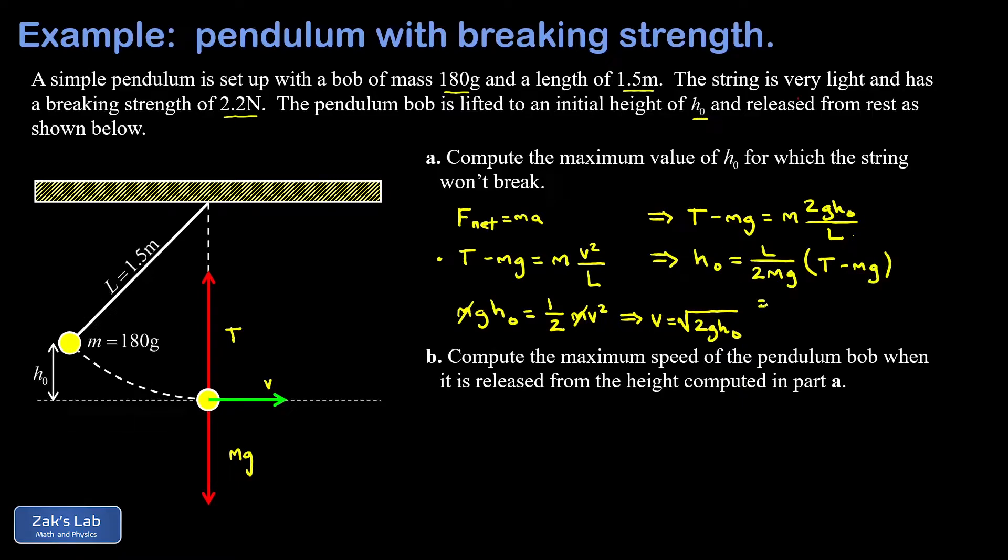Finally, we can plug in all our numbers. Make sure you convert that mass into kilograms, that's 0.180. g, we're going to use 9.8 for that. And what I'm assuming here is that my tension has been maxed out, so I'm plugging in that 2.2 newtons. In other words, we started this from the height that's just on the verge of breaking the string. Again, m is 0.180, and g is 9.8. And when I run the numbers on this, I get 0.185 meters, and we could write that as 18.5 centimeters.